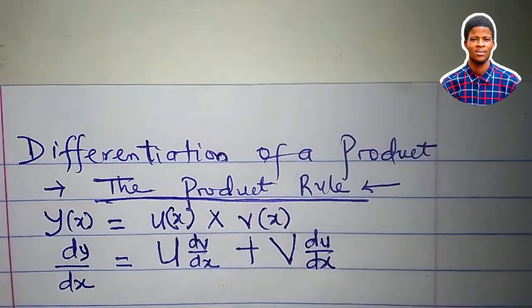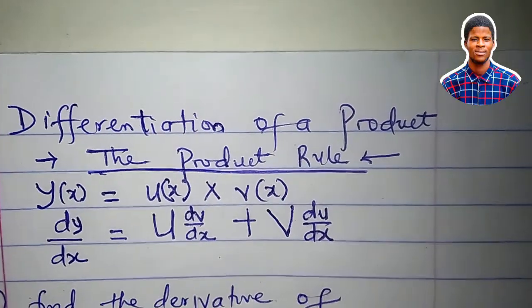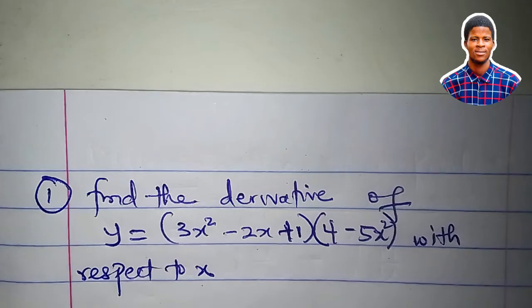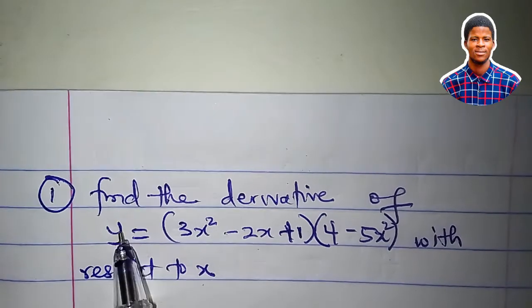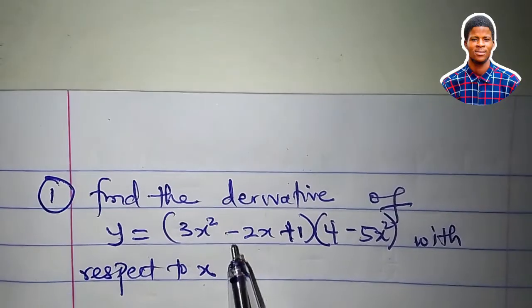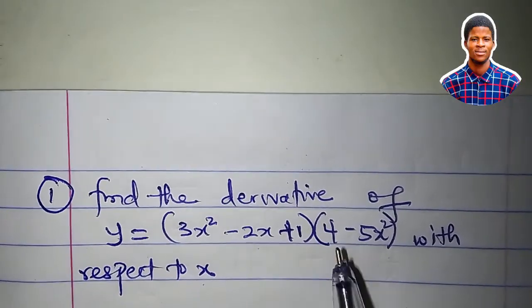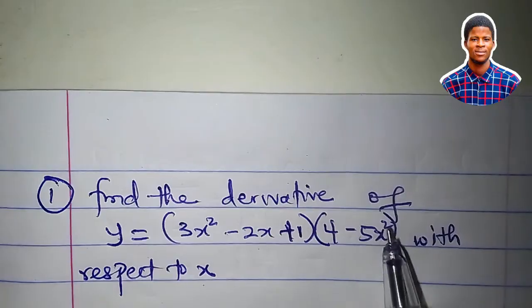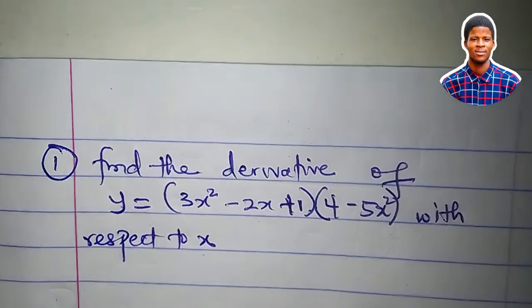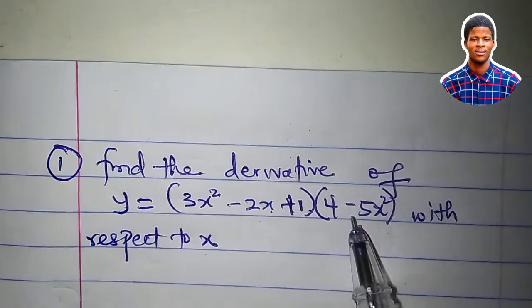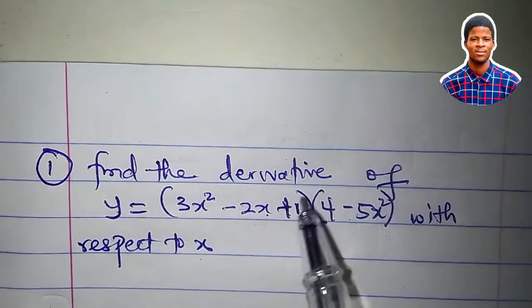We call this the product rule. We will now apply the product rule to find the derivative of the function y equal to 3x² minus 2x plus 1 times 4 minus 5x². Now, we can choose u to be any one, we can also choose v to be any of them.